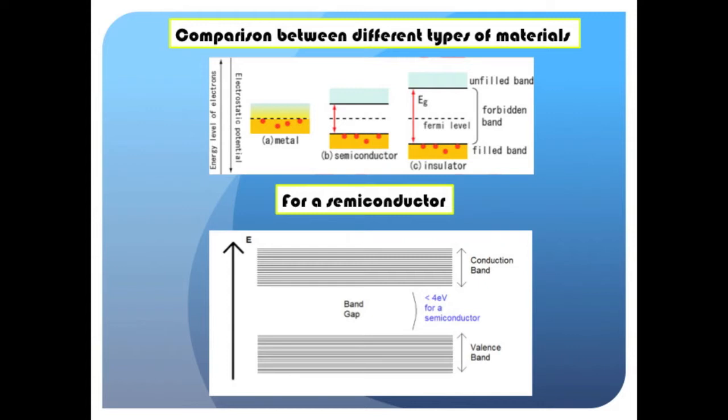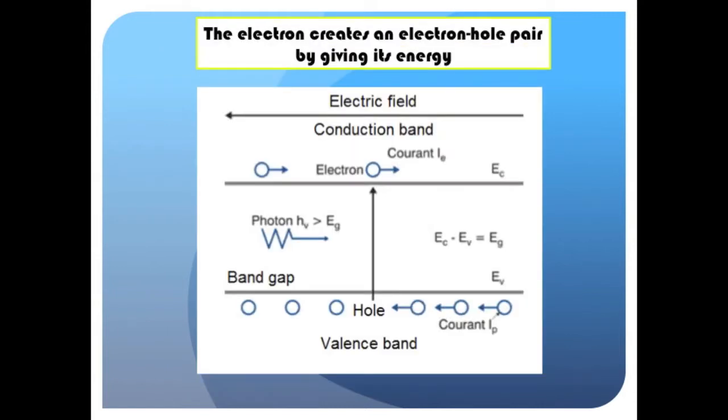For a semiconductor, a band gap exists, but this energy gap between the conduction band and the valence band must be lower than 4 electron volts. Then, photons can give their energy to electrons so that they can jump the gap and produce an electron hole pair. This electron hole pair can be used to generate current by applying a voltage on it.